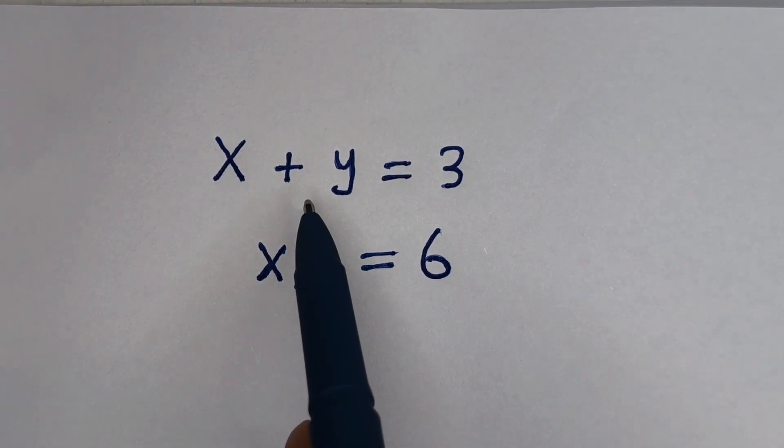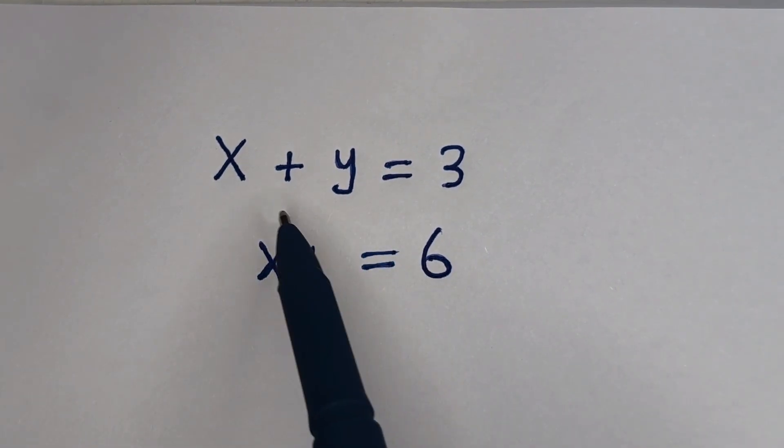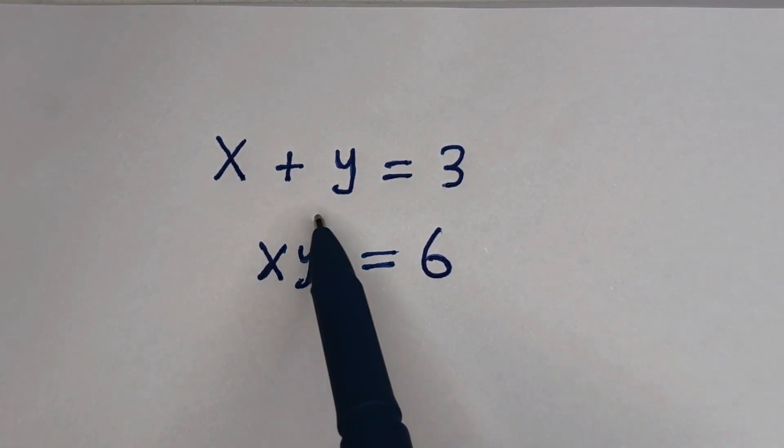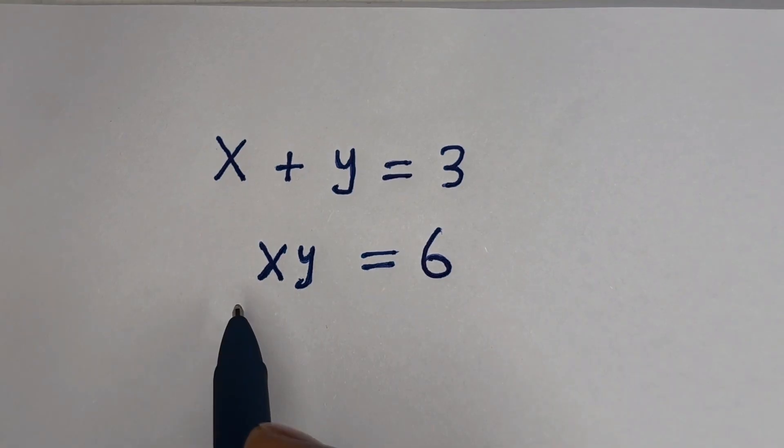Hello. How to solve for S and Y in this equation? S plus Y is equal to 3, and SY is equal to 6.